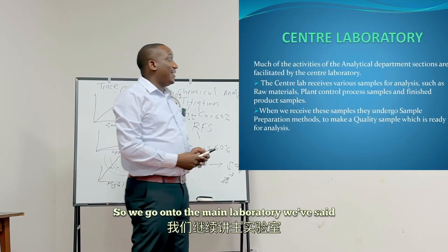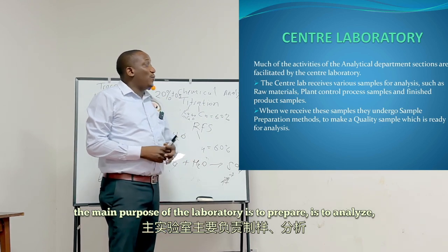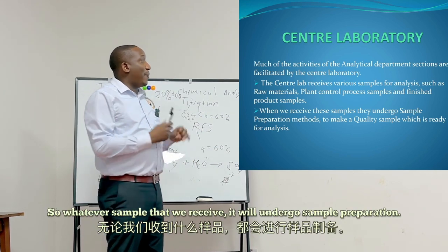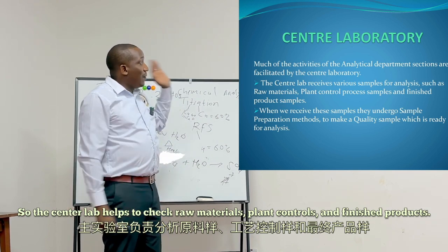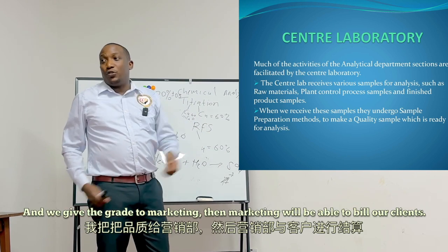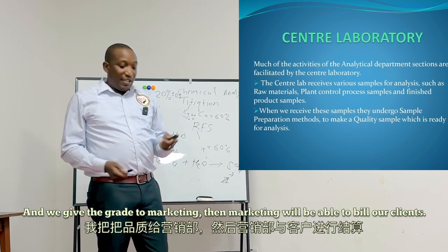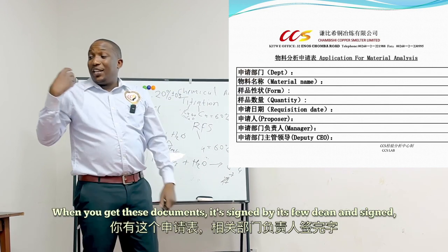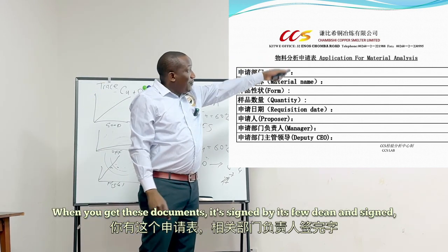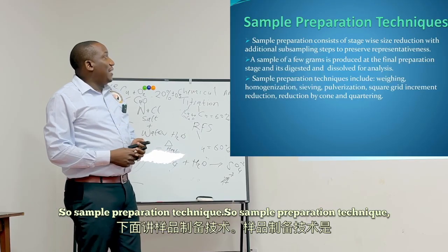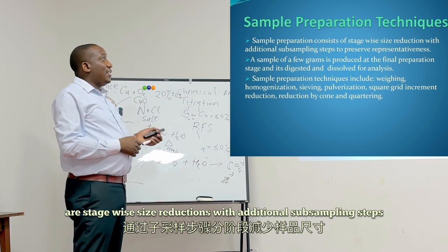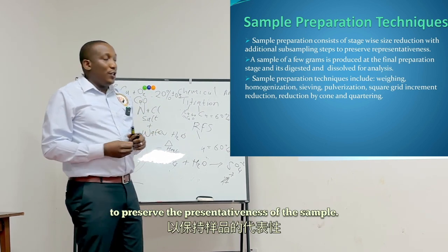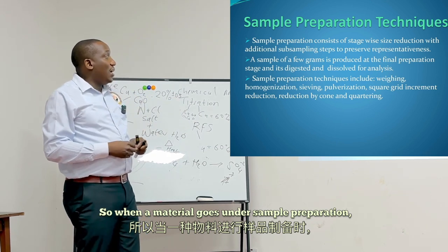We go on to the main laboratory. The main purpose is to prepare, analyze, and test samples. Whatever sample we receive will undergo sample preparation. The center lab checks raw materials, plant controls, and finished products, and provides grades to marketing so they can invoice clients. Sample preparation technique is the stage-wise reduction with additional sub-sampling steps to preserve the representativeness of the sample — making the material ready for analysis.